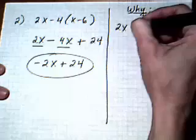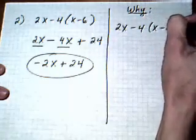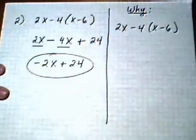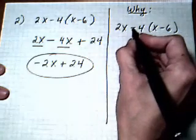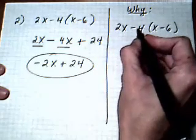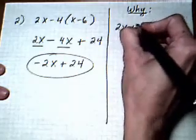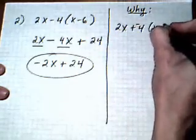So, we start with the original problem. 2x minus 4 times x take away 6. And, what I'm going to do now is rewrite it so that if I have subtraction, I'm going to turn it into add the opposite. So, add a negative, add a negative.